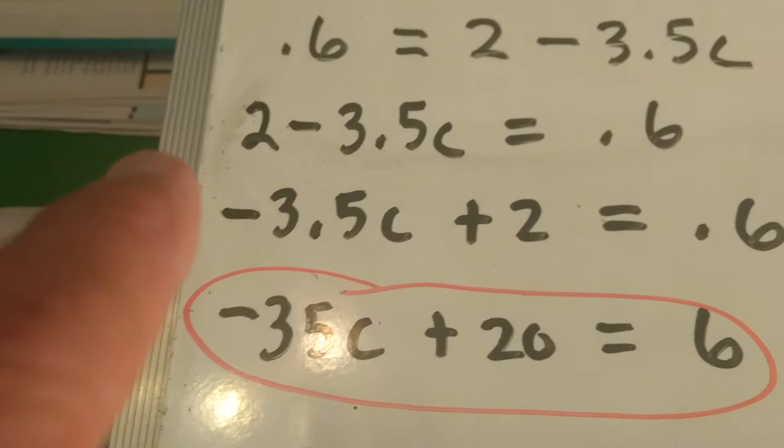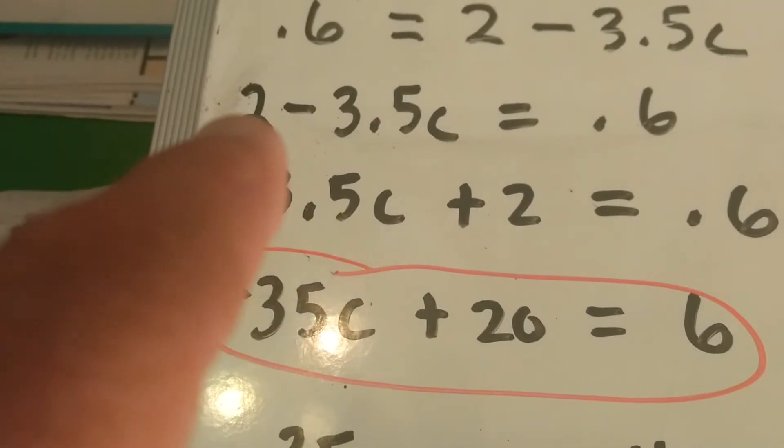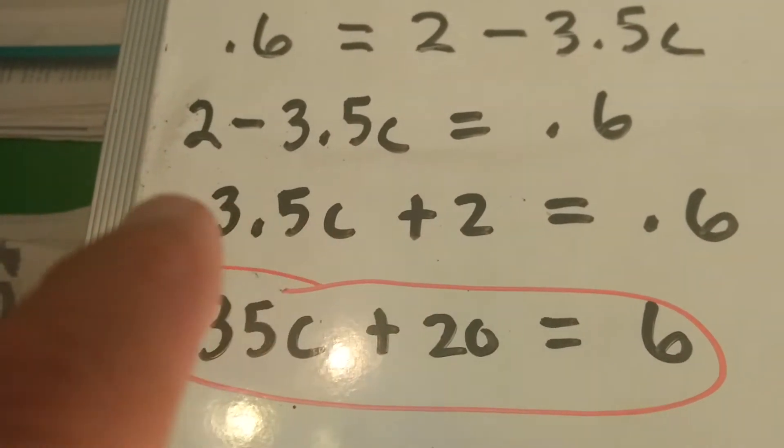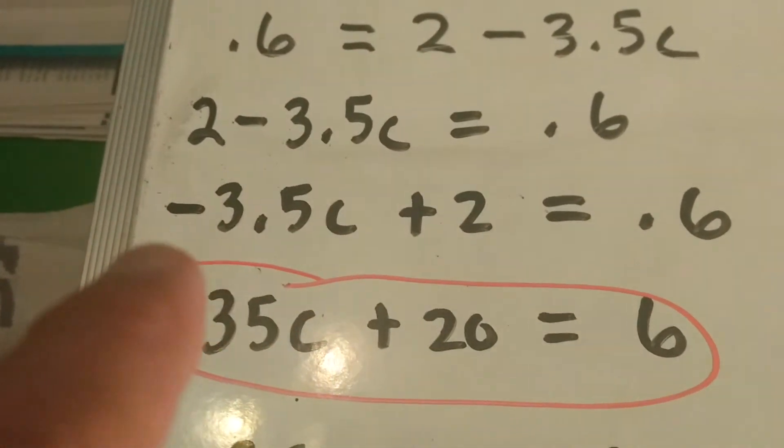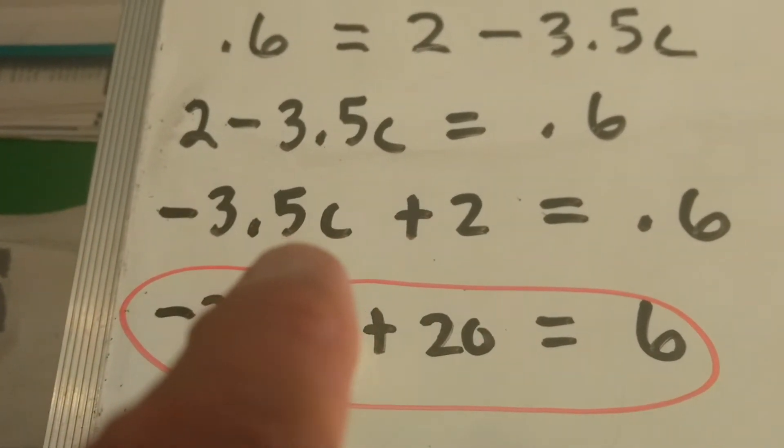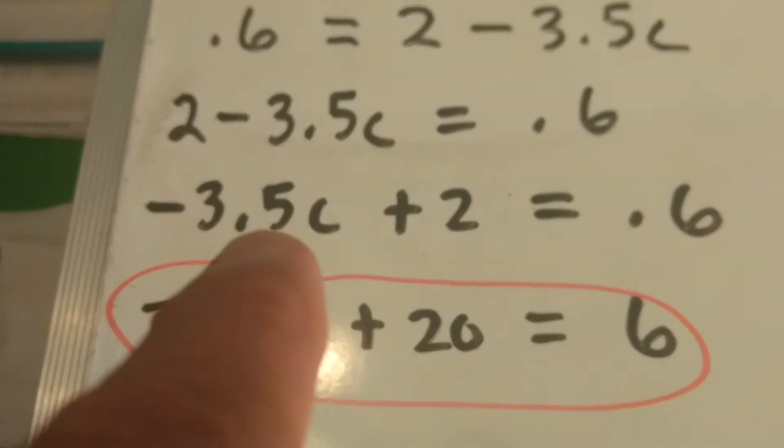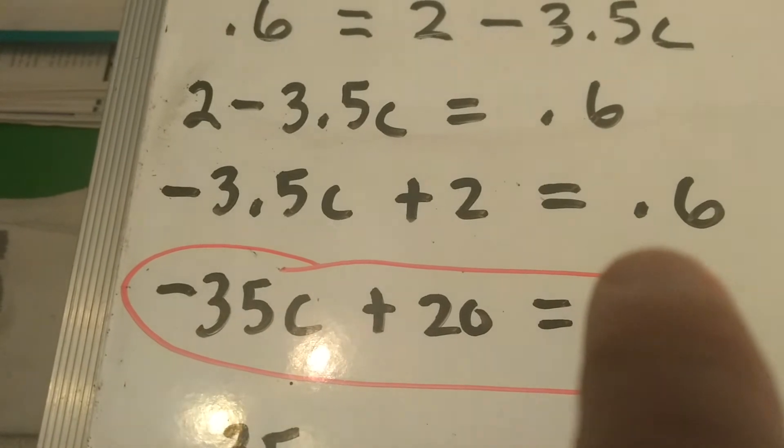Then what I did was take this right here and rearrange it. I put the negative 3.5c in the front, plus 2. The absence of a sign in front of the 2 means it's a plus. So now we are basically in two-step form with decimals. To get rid of the decimals, what we need to do is multiply by the highest decimal place. In this case, we have a tenths and we have a tenths, so the highest place is tens.